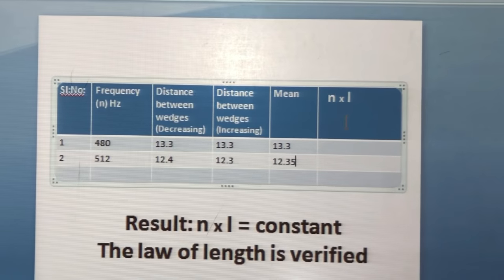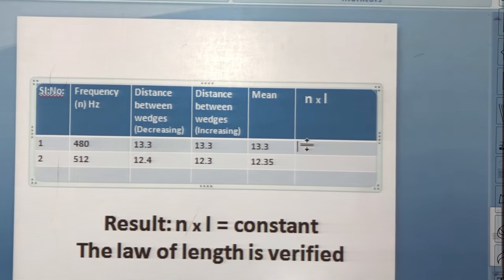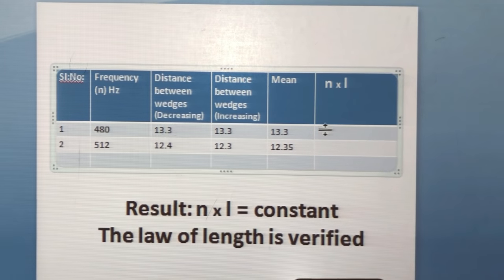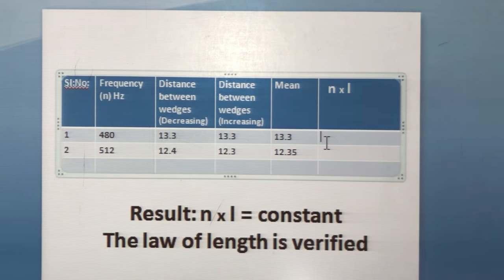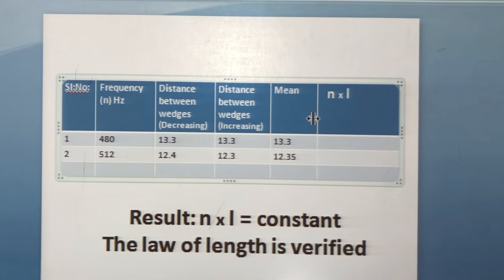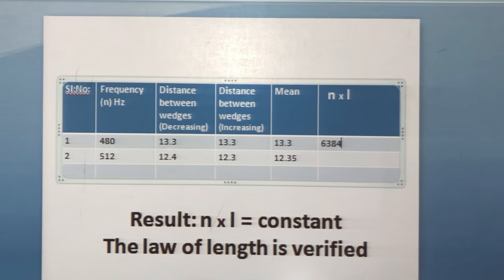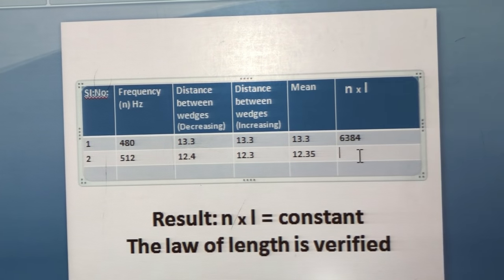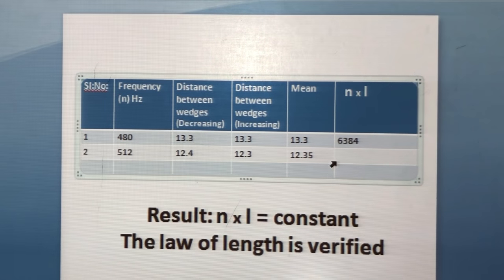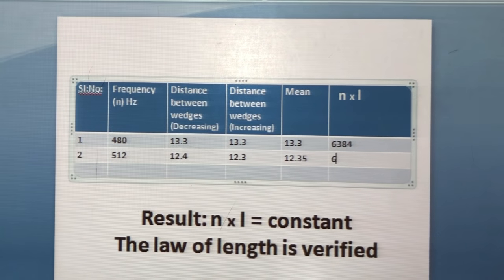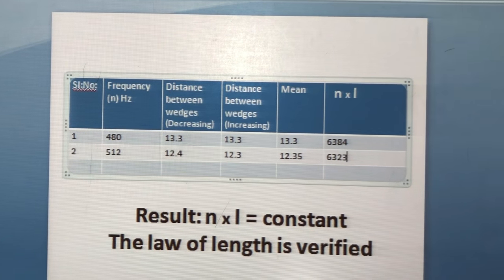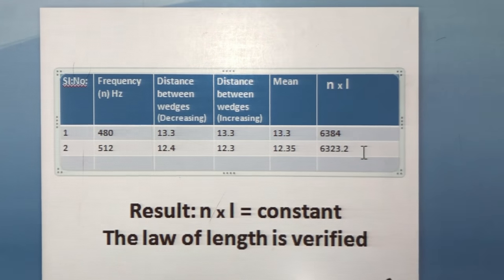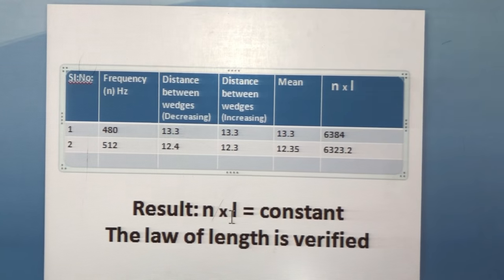The mean resonant length for 480 Hz was 13.3 cm. Multiplying frequency by length: 13.3 × 480 = 6384. For 512 Hz, N × L gives 6323.2. We can observe that the values of N × L are approximately equal, which shows that N × L is a constant, and thus the law of length is verified.